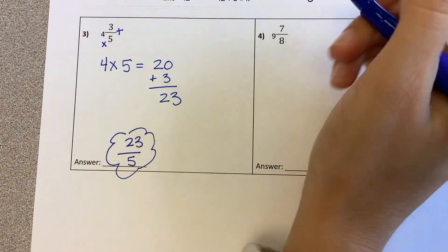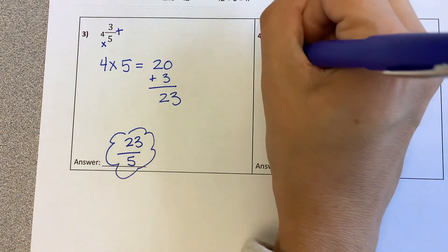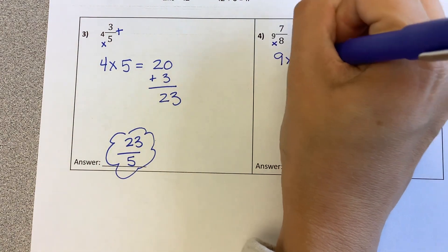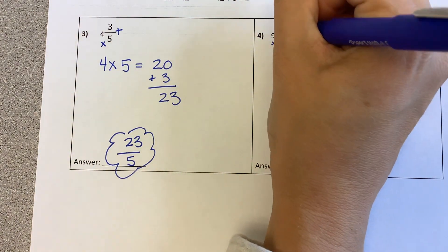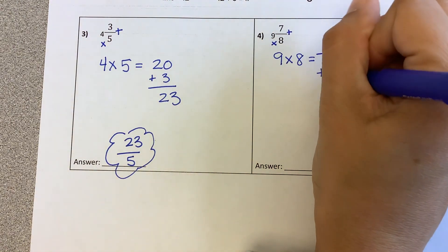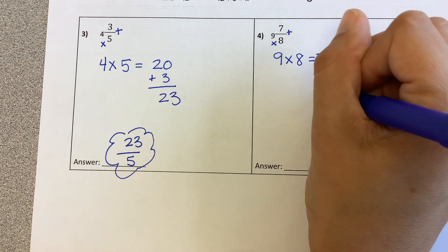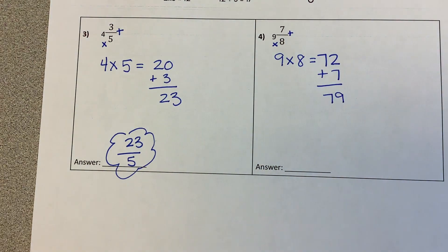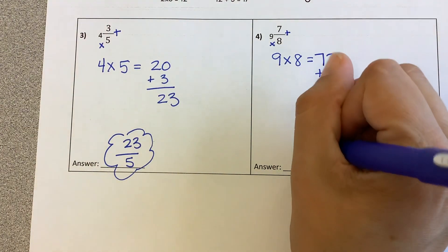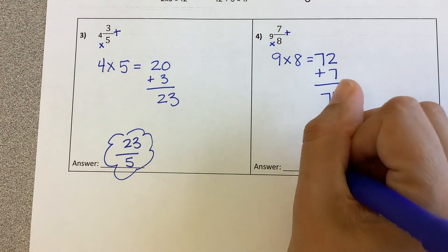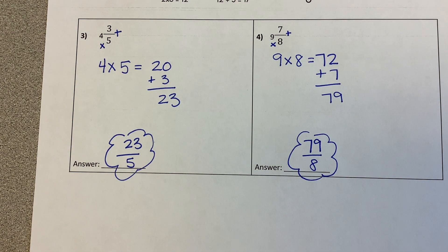Let's try number 4. We're going to multiply 9 times 8. Use your multiplication chart if you need to. It's 72. And then we are adding our numerator. So plus that numerator of 7. 7 plus 72 is 79. Now for our answer, that 79 goes on top over the original denominator of 8.